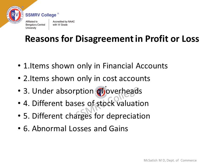The third reason is absorption of overhead. In Financial Accounts, the actual amount of expenses paid are recorded, while in Cost Accounts overheads are charged at pre-determined rates. If the overhead charges are not equal to the amount of overhead incurred, the under or over absorption of overhead leads to a difference in profits between the two accounts.